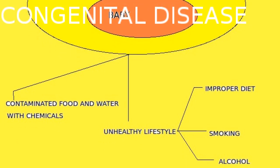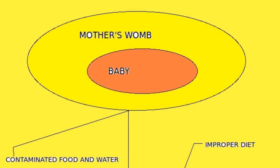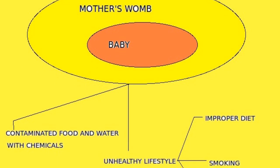How does congenital disease occur? Three to four chances exist. First, if the mother consumes contaminated food and water with chemicals, then since the baby is completely dependent on the mother's womb, whatever contaminated food the mother eats will be transferred to the baby, and the baby will also start suffering from various kinds of diseases.